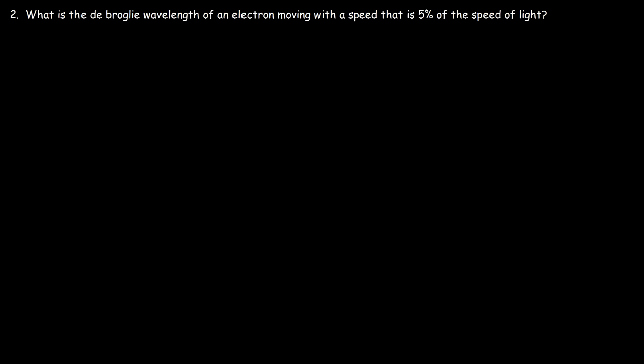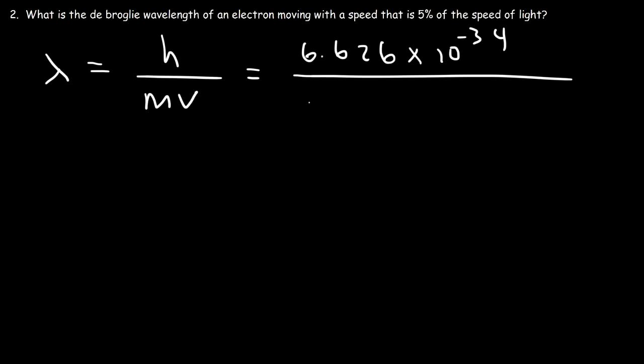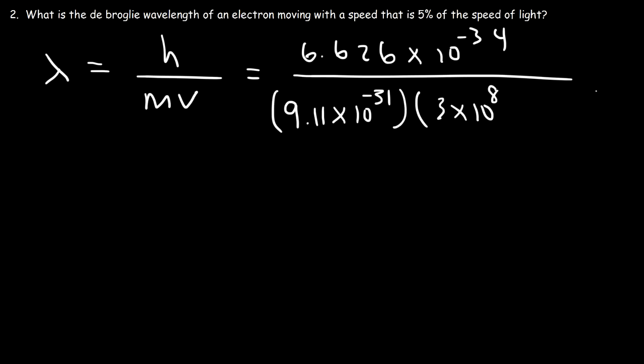Problem two: what is the de Broglie wavelength of an electron moving with a speed that is 5% of the speed of light? Planck's constant is not going to change. The mass of an electron — you can look it up in your textbook — is 9.11 times 10 to the minus 31 kilograms. The speed of the electron is 5% of the speed of light: 3 times 10 to the 8 meters per second multiplied by 0.05.